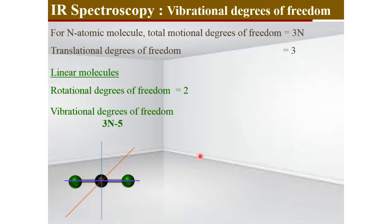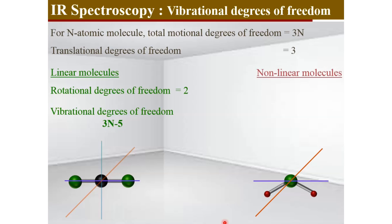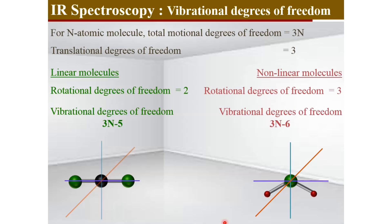For a non-linear molecule like water, the rotational motion about three axes marks three rotational degrees of freedom, and the remaining will be 3n − 6 vibrational degrees of freedom after the three rotational and three translational degrees. So this is how you can calculate how many different vibrational modes of motion are possible for linear and non-linear molecules.